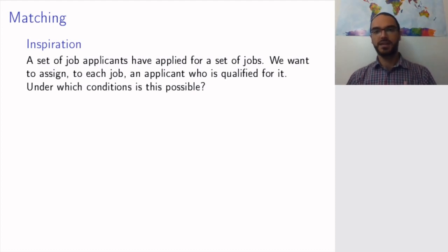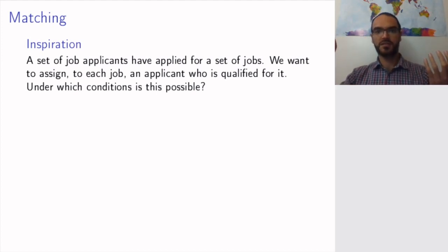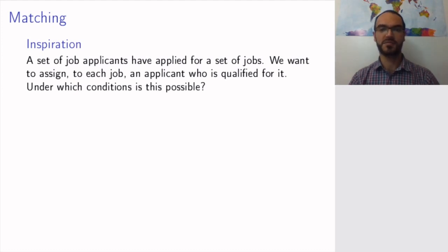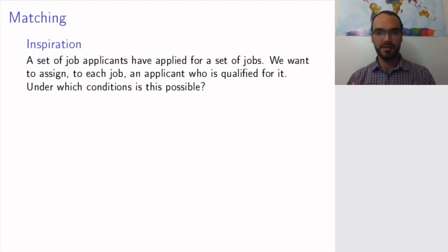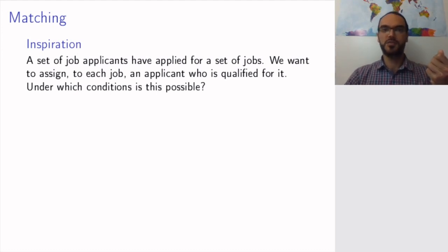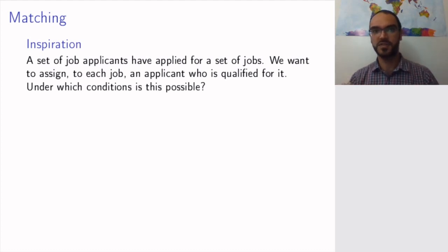So what is a matching problem? A matching problem is any type of problem where you have two sets of objects and you want to assign one object from one set to each object from the other. A very common application that can be the inspiration for us is job applications. Imagine you have a set of job applicants — maybe 50 applicants — who have applied for maybe 12 jobs. We want to assign to each job exactly one applicant, but it has to be an applicant who is qualified for the job. If one of the jobs doesn't have any qualified applicant, this will not be possible. So we will look at under which conditions this is possible or not.